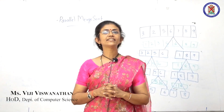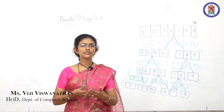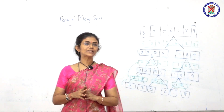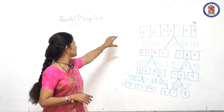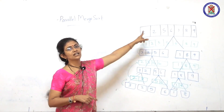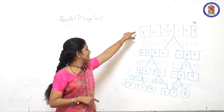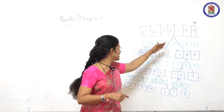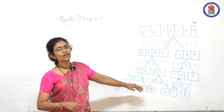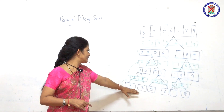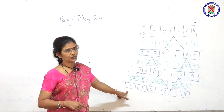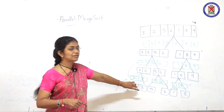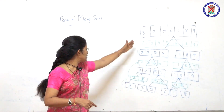Hello students, today we will discuss parallel merge sort. We divide the array and work with smaller parts. We divide at the middle point and recursively move to the smallest subproblem, reducing down to unit size.